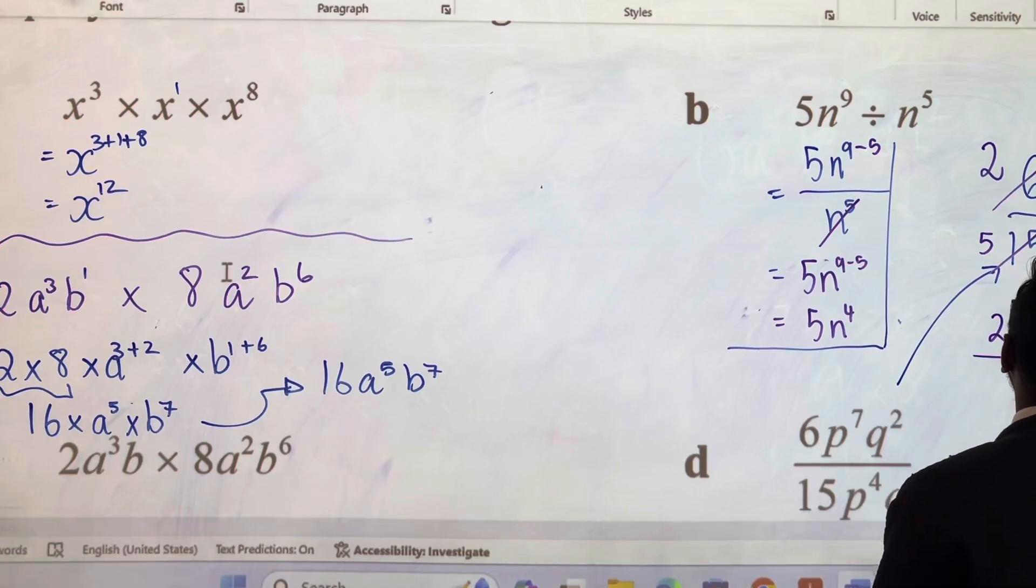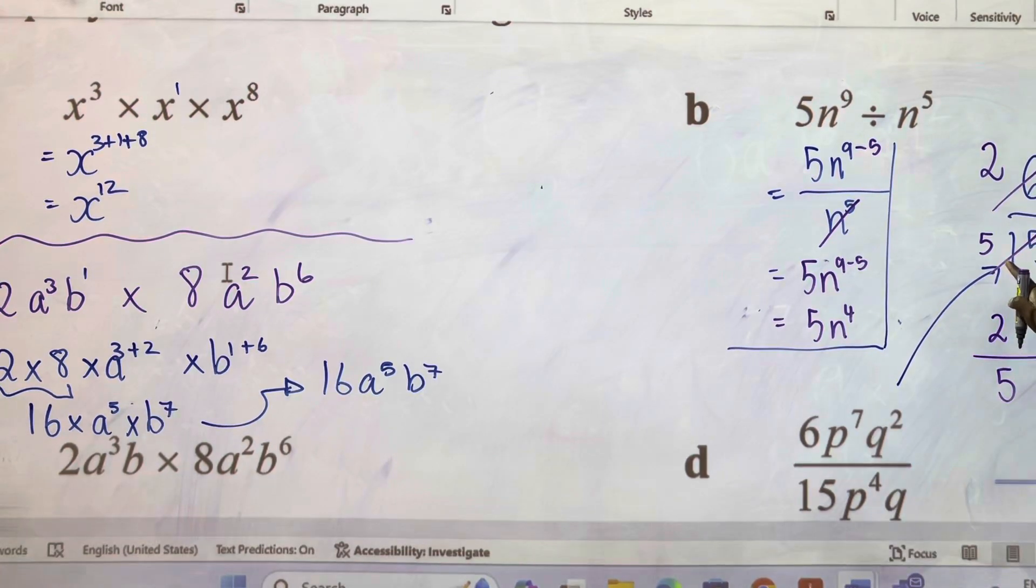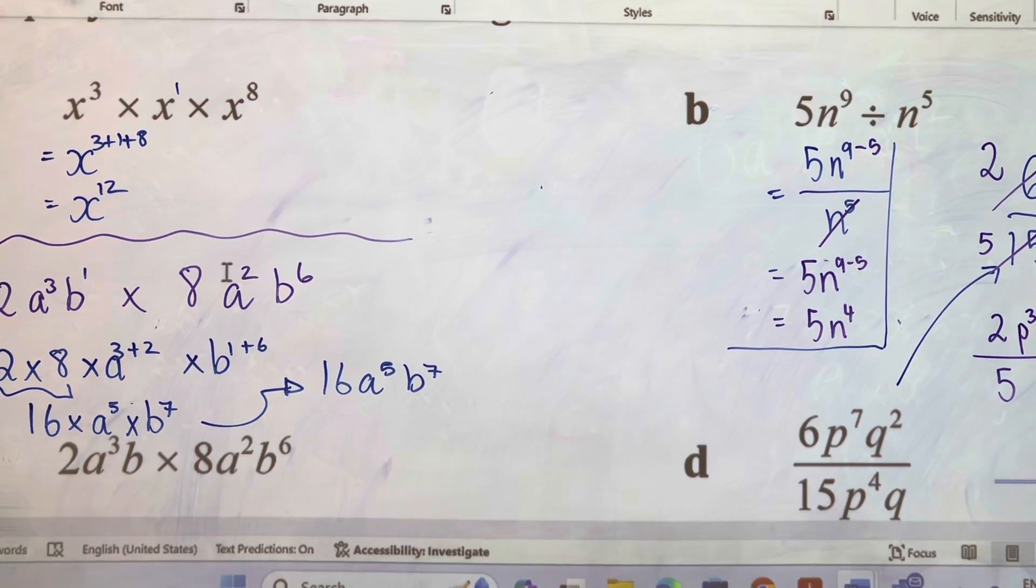What are you left with now? 2 over 5. Where do we get our 5? This is the hardest part. Once we've crossed them, it's so hard to see things clearly. So you've got to be really careful. You've got to be patient as well. So this question, p, 7 take away 4, so it's going to be p to the power of 3 and then q to the power of 1.